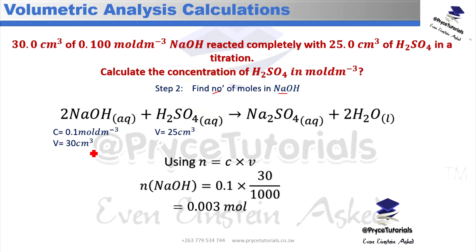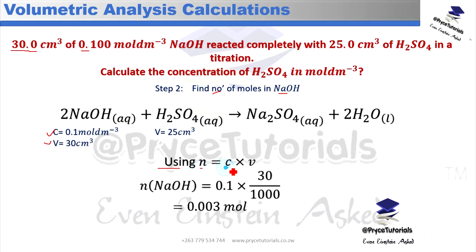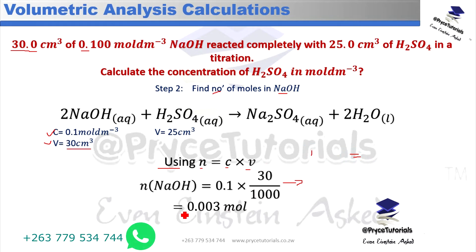The second step is to find the number of moles of NaOH. From the question, we have a concentration of 0.1 mol/dm³ and a volume of 30 cubic centimeters. Using the formula: number of moles = concentration × volume, we substitute: 0.1 × 30/1000, converting cubic centimeters to dm³ by dividing by 1000. This gives us 0.003 moles.